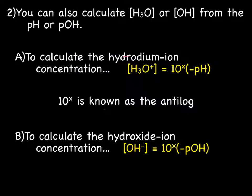You can also calculate the concentration of H3O, or the concentration of H+—remember those are interchangeable terms—or the concentration of OH from the pH or the pOH. Which means if we know pH or pOH, we can use a new formula to calculate H3O or OH. Let's go over the formulas real quick and then we'll talk about what they mean and how to use them.